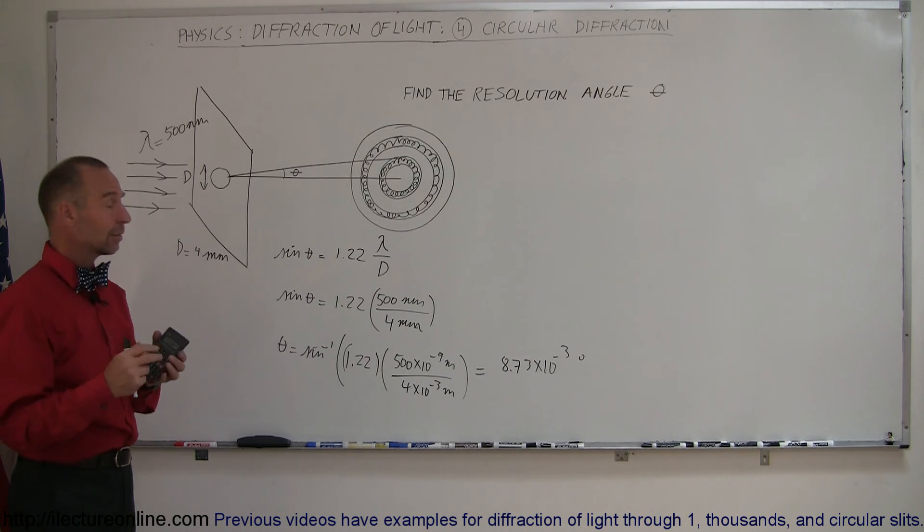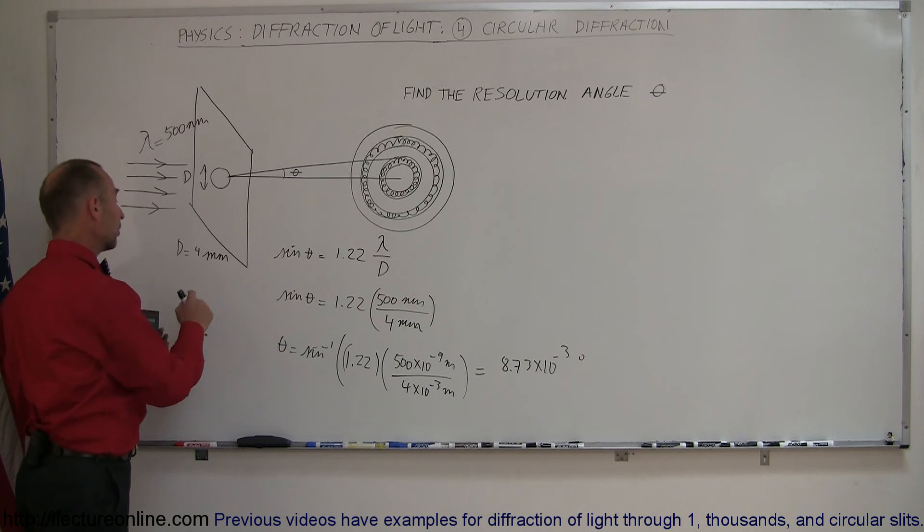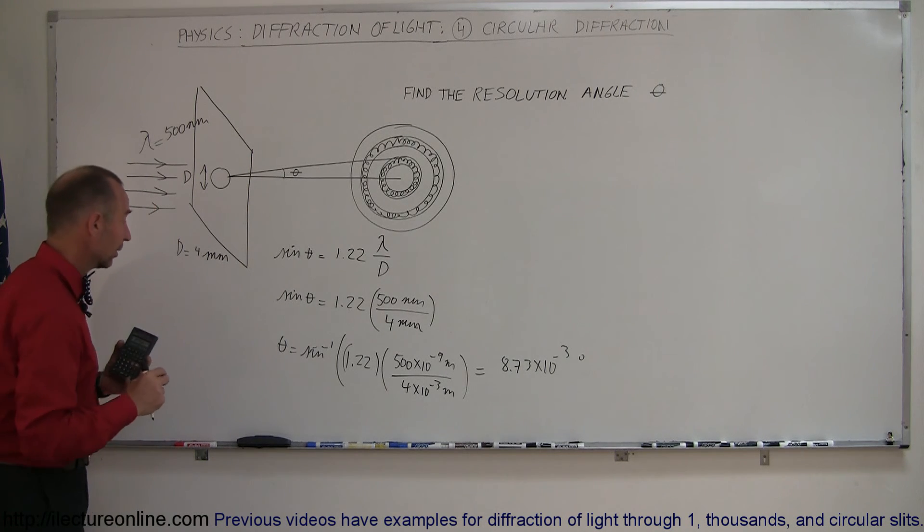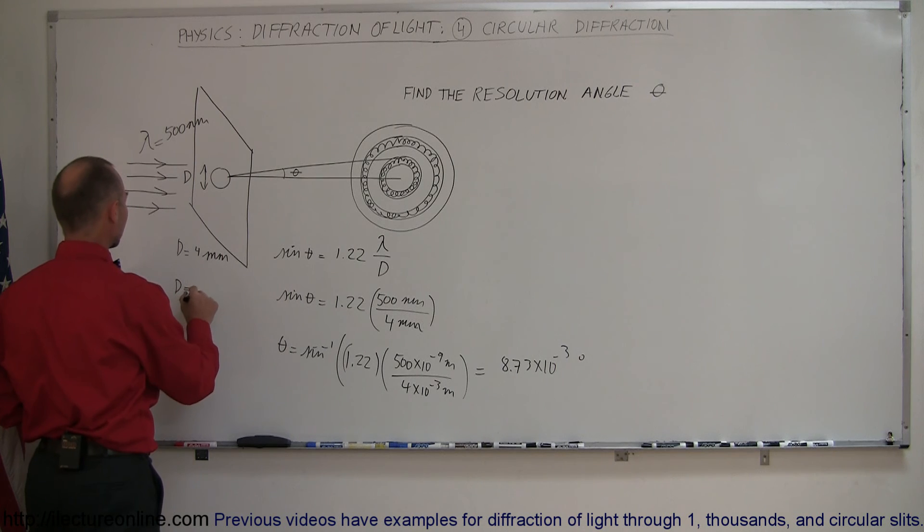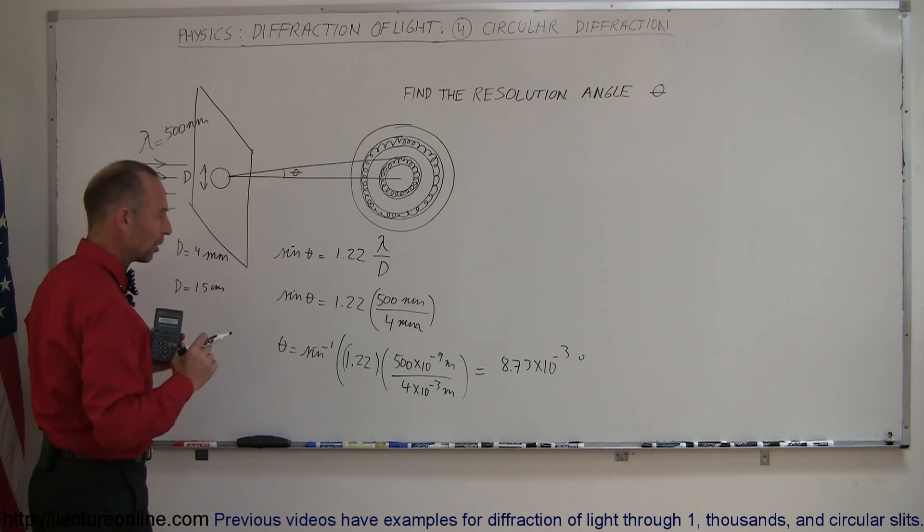But now, let's take an eagle, for example. An eagle has a diameter of the pupil that is much greater than human vision. For example, the diameter of an eagle is probably more like 1.5 centimeters when they open their eyes wide open and they're scouring the grounds for rodents.